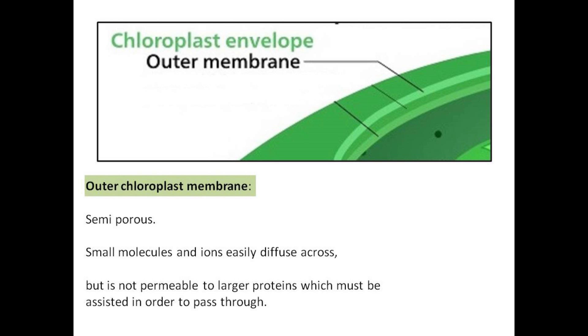The outer chloroplast membrane is semi-porous. Small molecules and ions easily diffuse across, but it is not permeable to larger proteins, which must be assisted in order to pass through.